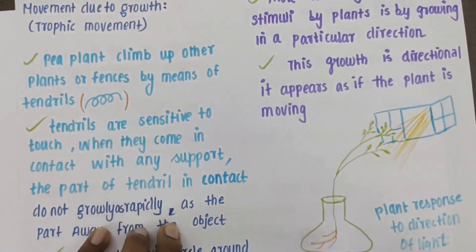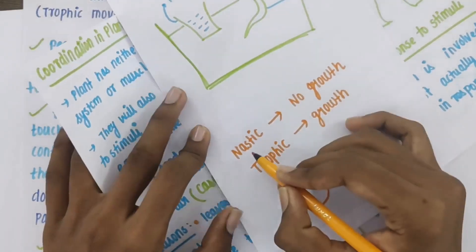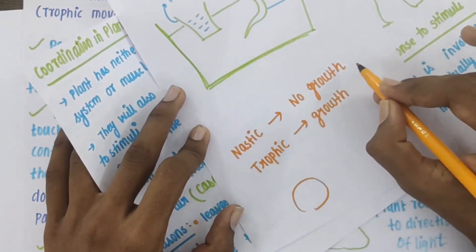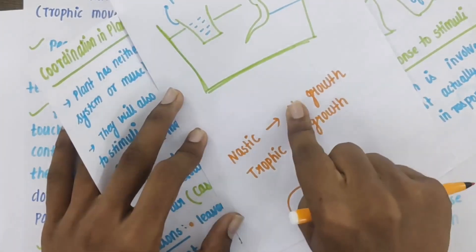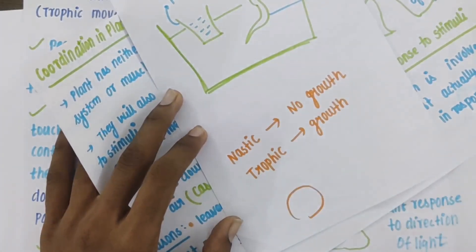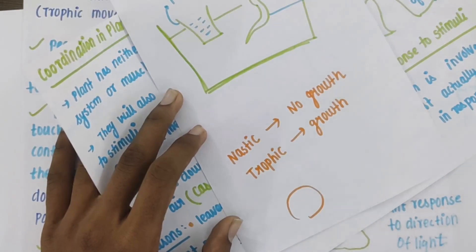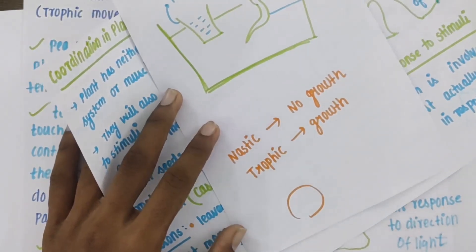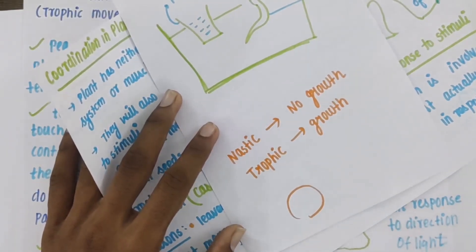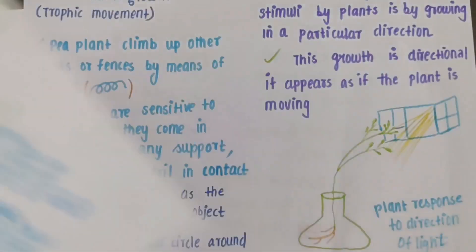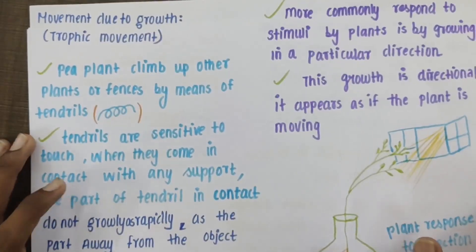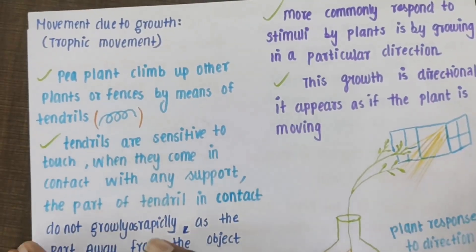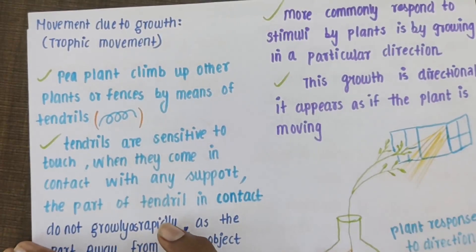This question is repeatedly asked, so I am explaining very patiently. Now we move on to the next type of movement. There are two types of movement: nastic movement and tropic movement. Nastic movement has no growth; the next one — tropic movement — depends on growth. If you touch the plant, the water can get out of the cell, so the cell shrinks, and that causes movement. Now we have tropic movement, which is the movement that depends on growth.